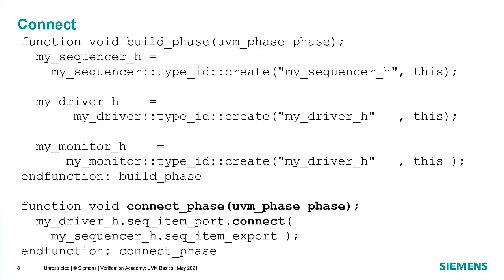When it comes to connecting the components together, we use the connect phase. The connect method connects together child components by calling the connect method on the port and export of the components we want to connect. My driver has something called a sequence item port, and my sequencer has something called a sequence item export, and the connect method hooks those two things together. You can think of this as a fancy version of ports in Verilog and VHDL, but the effect is the same — now the driver is connected to the sequencer and they will communicate through the sequence item port.